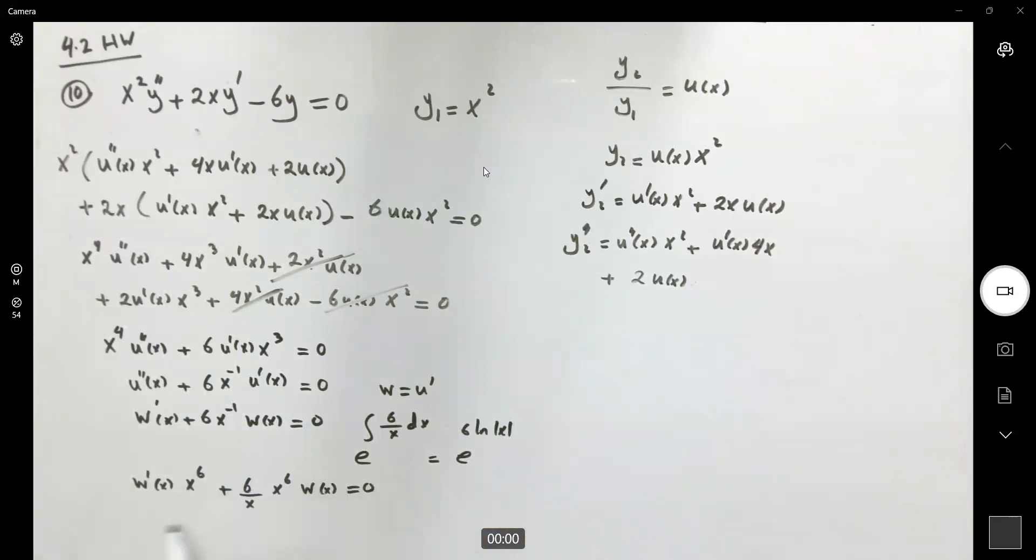However, on the left-hand side, we have the d/dx of w times x to the sixth. And on the right-hand side, we have a zero. So w times x to the sixth is equal to c, and w is c times x to negative six. Well, at the same time, we know that w is equal to u prime.